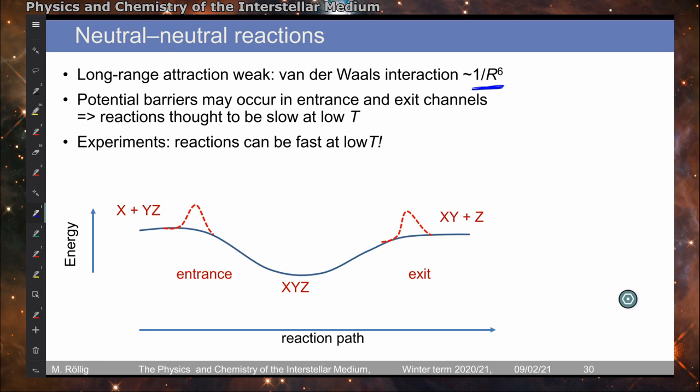And there might also be the case that we have energy barriers at the entrance and the exit channel of our reactions which should even further slow down the reaction. So this was something that was thought to be very slow at low temperatures. However, experiments show that some of these reactions can be fast at low temperatures.